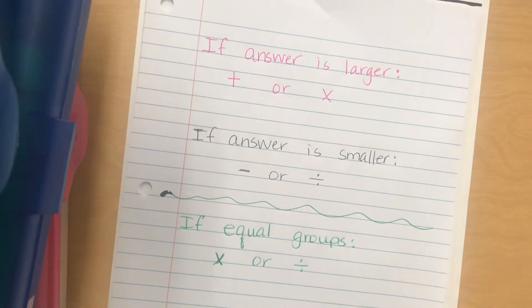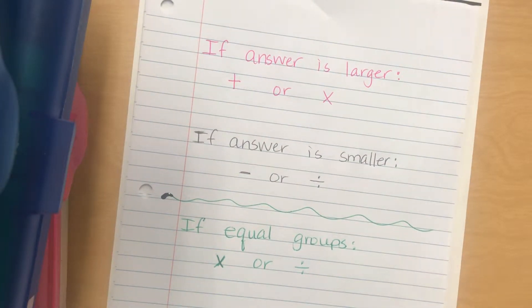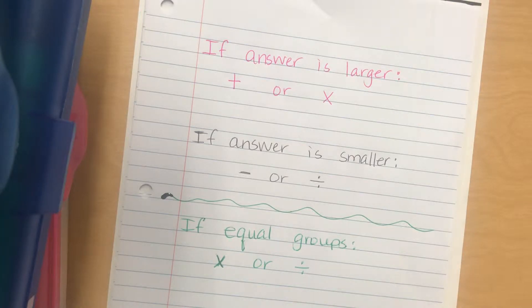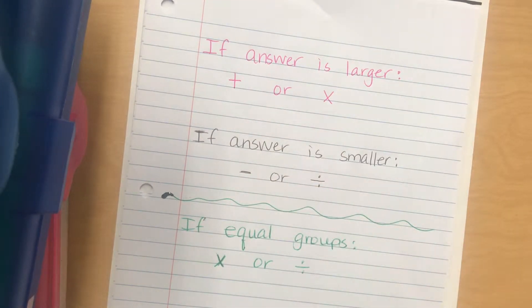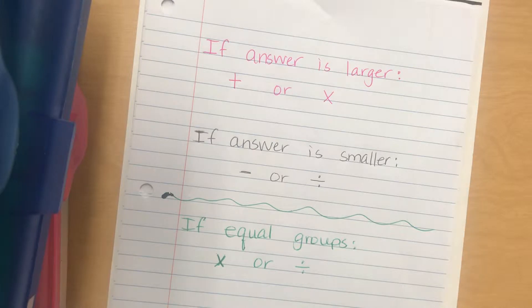We've been doing this since the beginning of the year. The only difference now is that most of our word problems have been multiplication and division because that's what we've been learning, but in this chapter we have to decide which of the four operations to use. Remember those are your only four choices: you can either add, subtract, multiply, or divide. There aren't any other hidden mathematical operations.